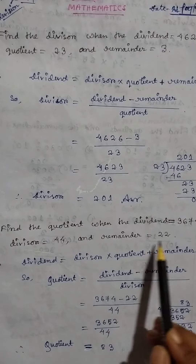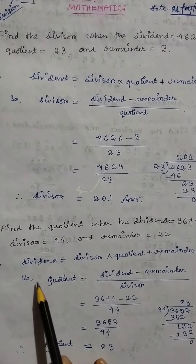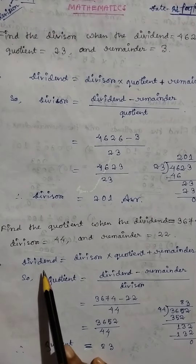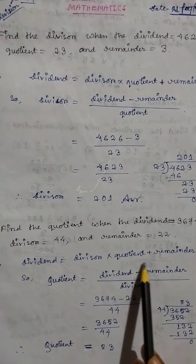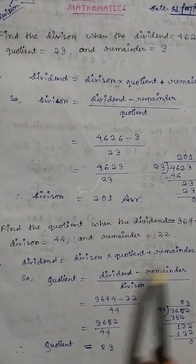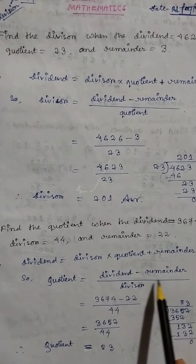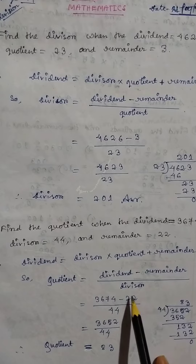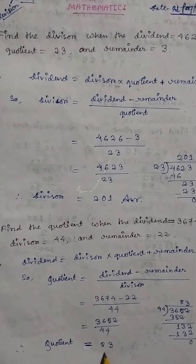Problem 4: Find the quotient when the dividend equals 3674, divisor equals 44, and remainder equals 22. Dividend equals divisor into quotient plus remainder, so quotient equals dividend minus remainder divided by divisor. The answer: quotient equals 83.